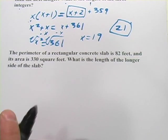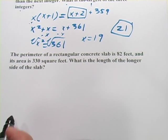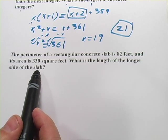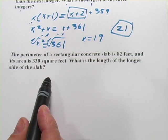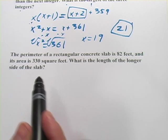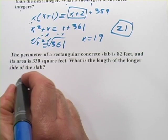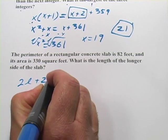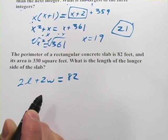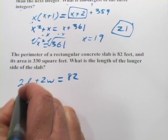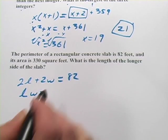All right, one more. This one says the perimeter of a rectangular concrete slab is 82 feet, and its area is 330 square feet. What is the length of the longer side of the slab? So it looks like we're going to need to make two equations here. A perimeter of a rectangular would be 2L + 2W = 82 feet. And the area would just be length times width equals 330.